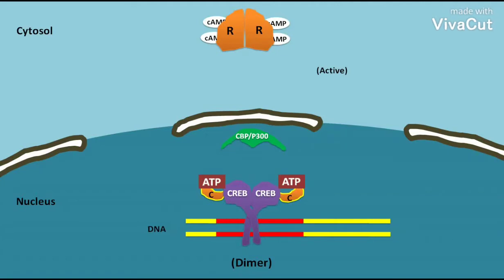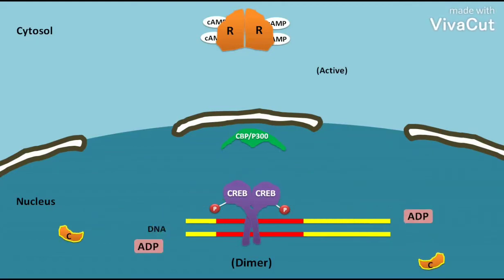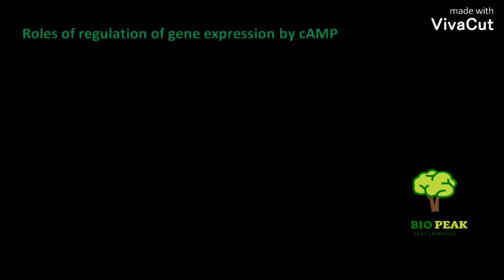The two ATPs are converted, releasing two phosphate groups, which are then added to serine 133 of two CREBs. As a result, the CREBs are phosphorylated and become active. The catalytic domains and ADPs are then freed. The phosphorylated CREB dimer then associates with the co-activator CBP or P300, and this binding stimulates the transcription of target genes.